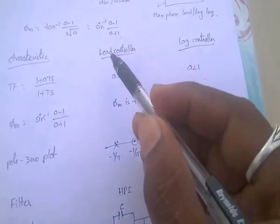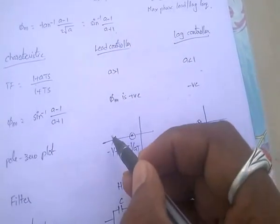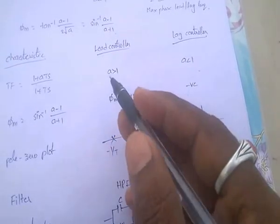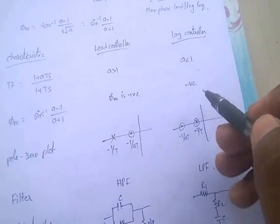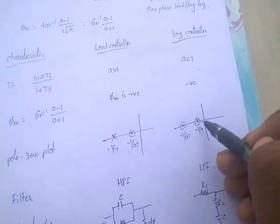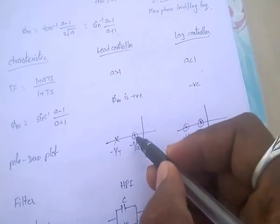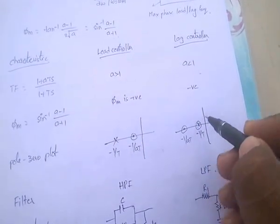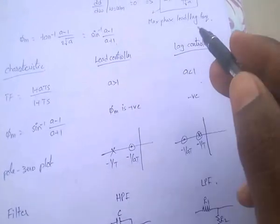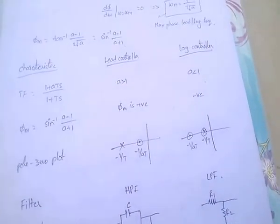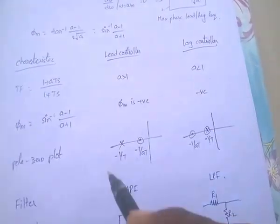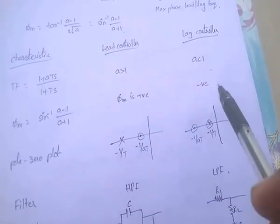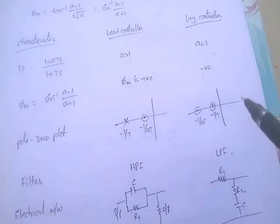For the pole-zero plot: for the lead controller, the arrangement is pole then zero (zero is nearer to the origin). For the lag controller, the arrangement is zero then pole (pole is nearer to the origin) — very, very important.